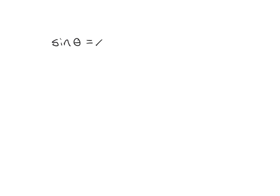To start, we have to talk about inverse trig functions. Let's say that we have sine of theta — sine of an angle is equal to a value x — and this time we want to find the angle. So how do we isolate theta? Just like any time you're solving an equation, you use inverse operations. If we take the inverse sine — sine to the power of negative 1 — of sine theta, whatever you do to one side you must do to the other side.